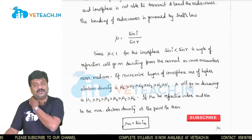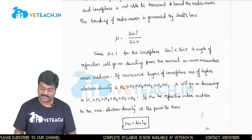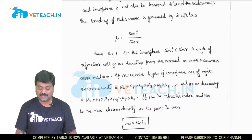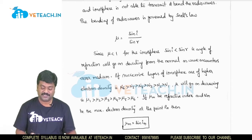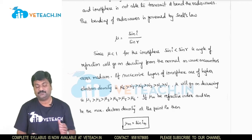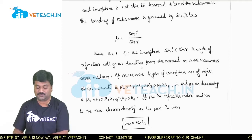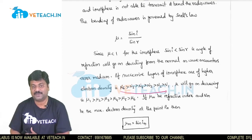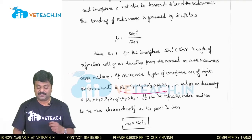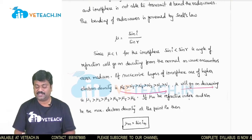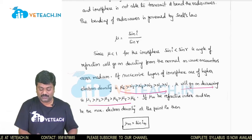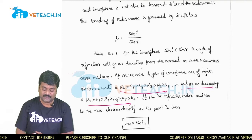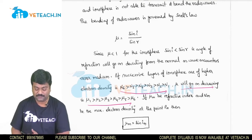In that way we encounter rarer mediums. The successive layers of ionosphere have higher electron density in a descending pattern: n6 is greater than n5 is greater than n4, descending from the top layer to the bottom. Therefore, the refractive index goes on decreasing from bottom to top.